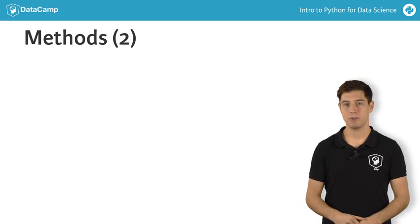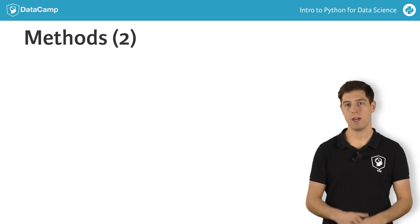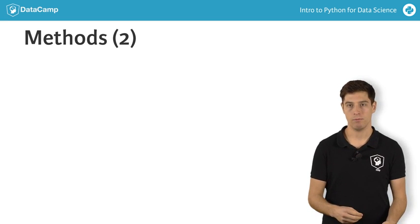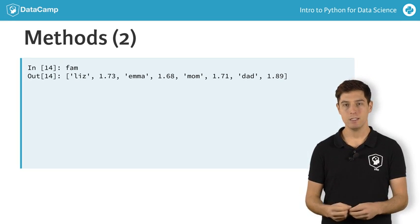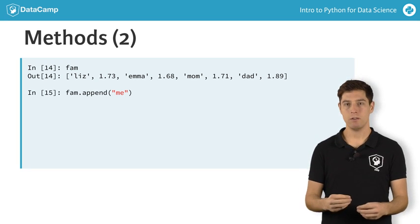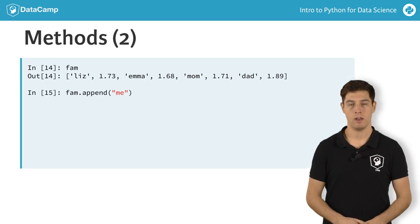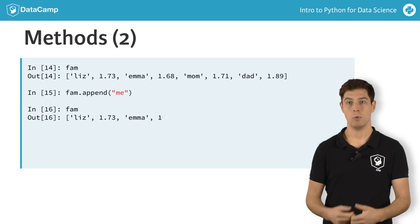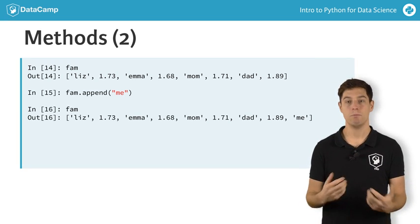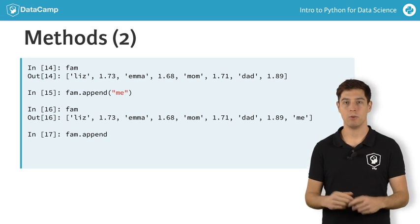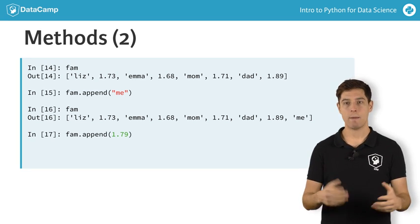Before I unleash you on some exercises on methods, there's one more thing I want to tell you. Some methods can change the objects they are called on. Let's retake the fam list and call the append method on it. As the input, we pass the string we want to add to the list. Python doesn't generate an output, but if we check the fam list again, we see that this has been extended with the string me. Let's do this again, this time to add my length to the list. Again, the fam list was extended.